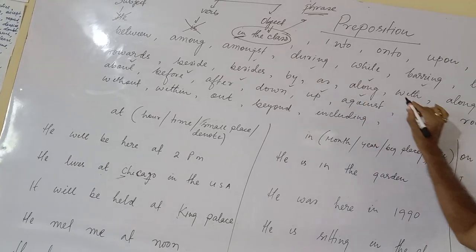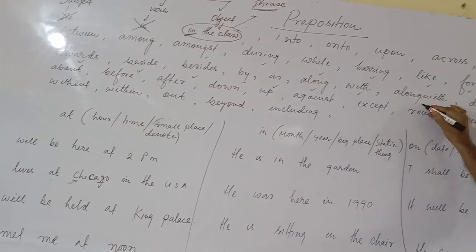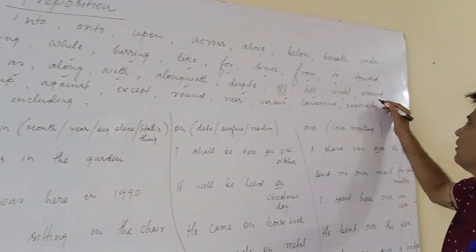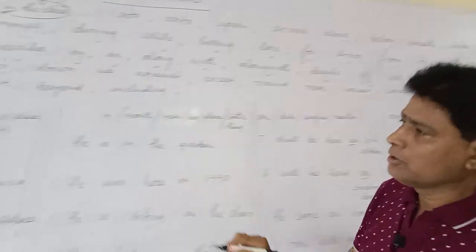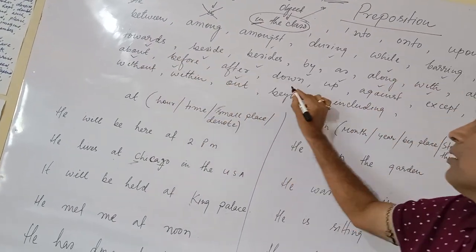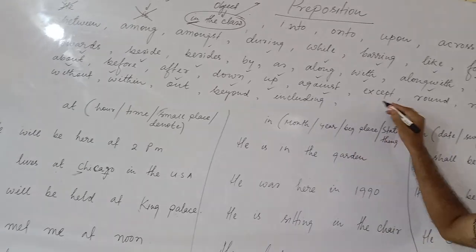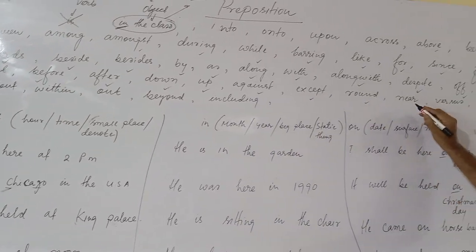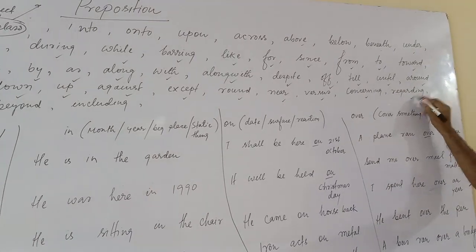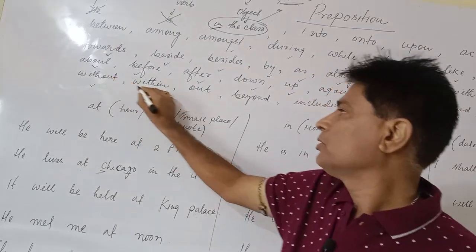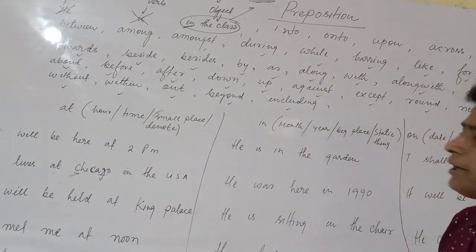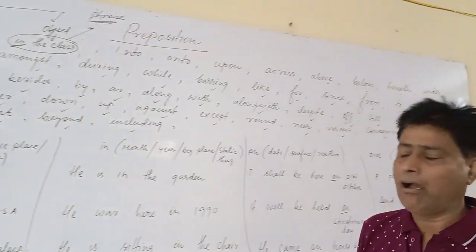along with, despite, of, till, until, around, about, before, after, down, up, against, except, round, near, versus, concerning, regarding, without, within, out, beyond, including, etc.